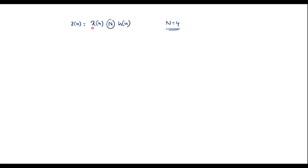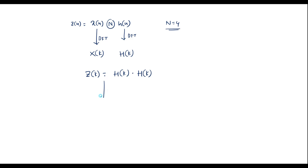Here, N = 4 since it has 4 samples. In Stokeham's method, first we find DFT of sequence x(n), giving X(k), and DFT of h(n), giving H(k). Then we find the product Z(k) = X(k) · H(k). Then we find the inverse DFT of Z(k) to get z(n). To find X(k) and H(k), we use DIF FFT algorithm, and to find inverse DFT, we use IDIT FFT algorithm.